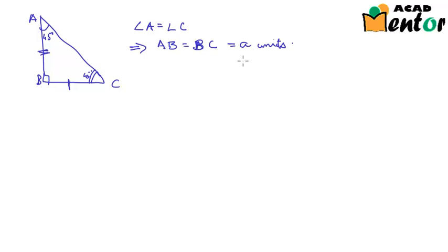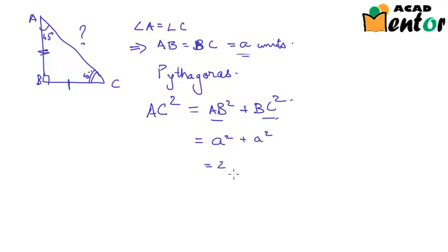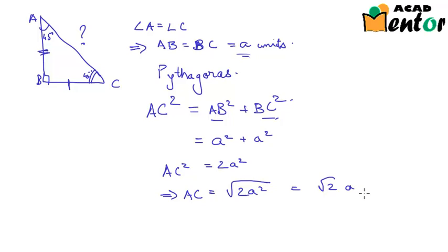Using the Pythagoras theorem in triangle ABC with right angle at B, AC is the hypotenuse. So AC² = AB² + BC². Since AB and BC are both A units, we get AC² = A² + A² = 2A². Therefore AC = √(2A²) = √2 · A. So the three sides are AB = A, BC = A, and AC = √2·A.